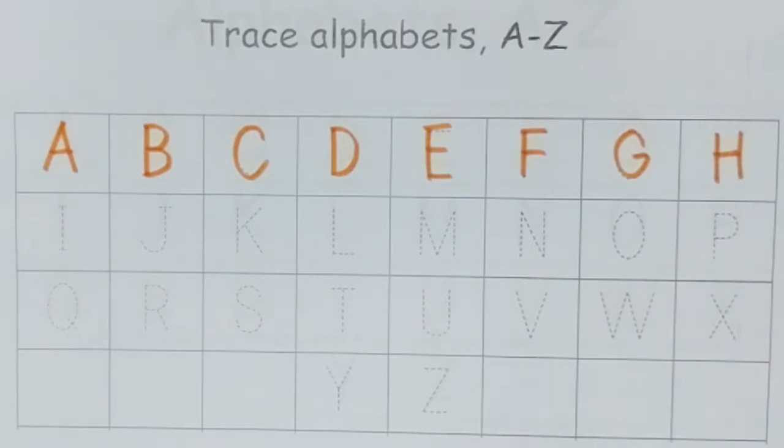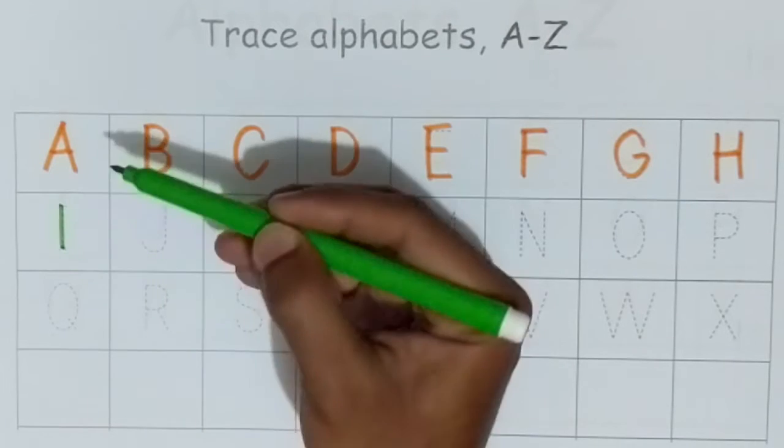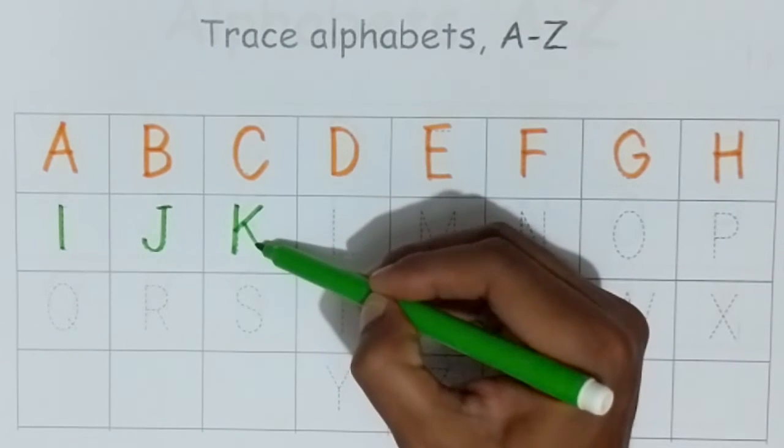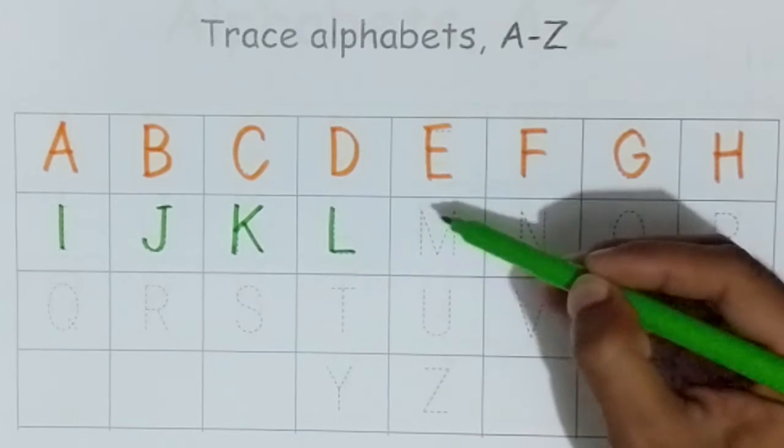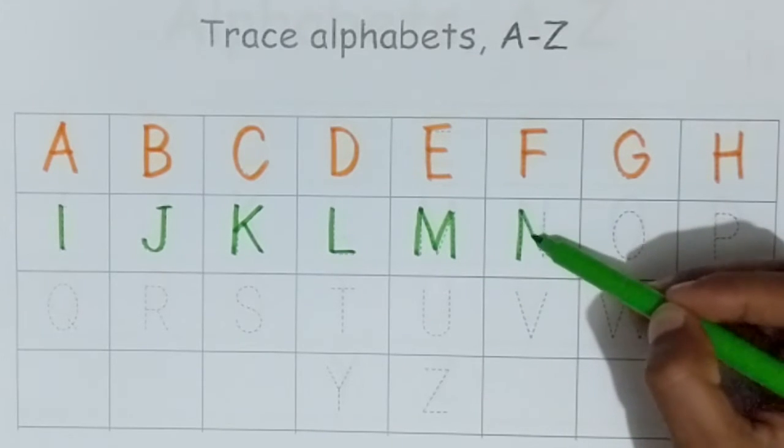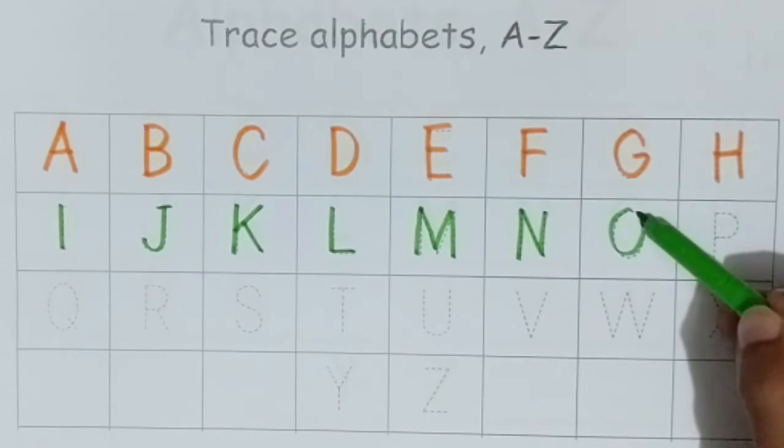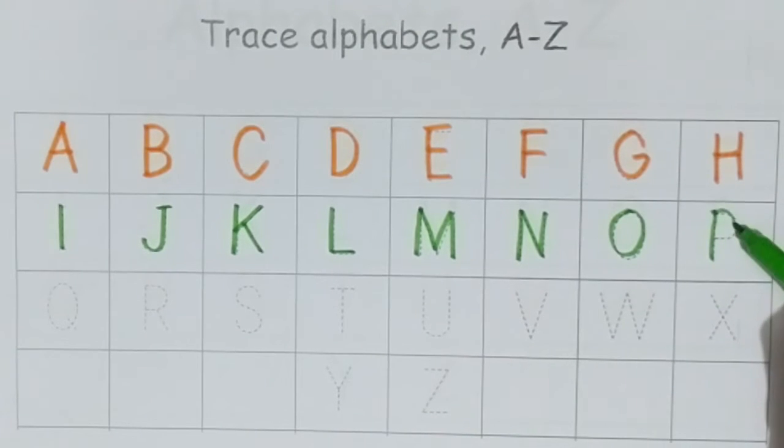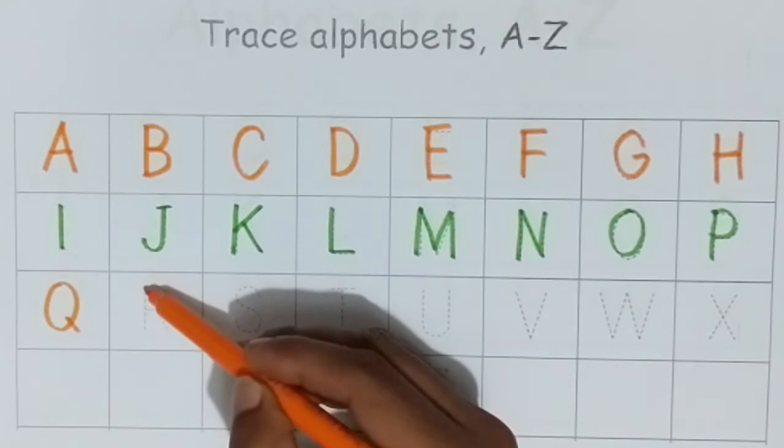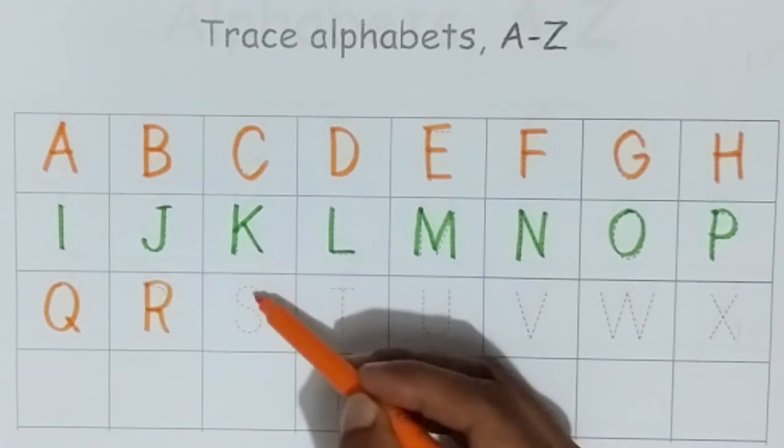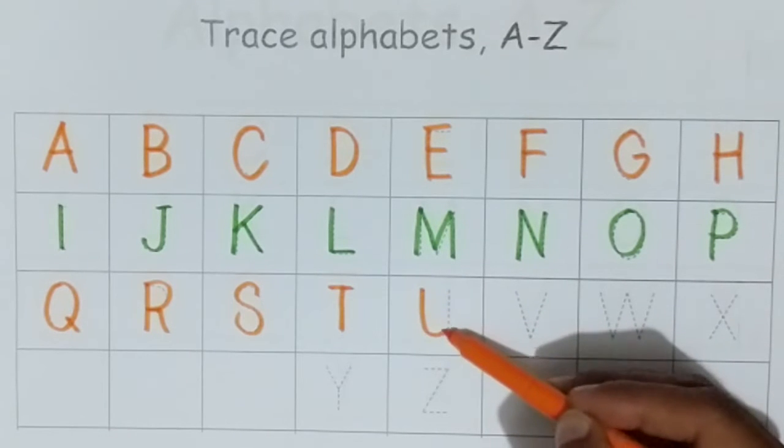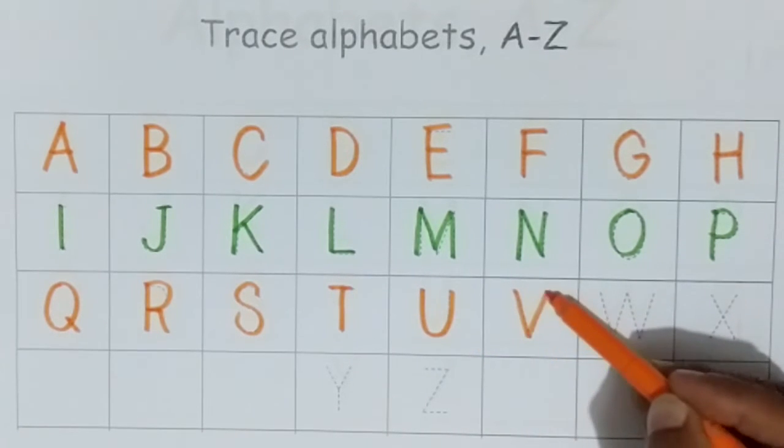H. Green color. I, J, K, L, M, N, O, P. Orange color. Q, R, S, T, U, V, W.